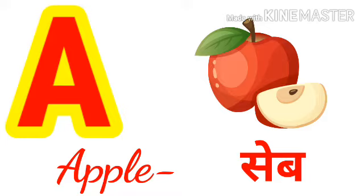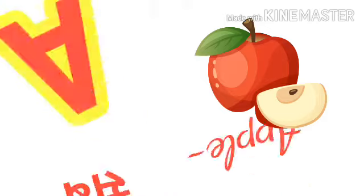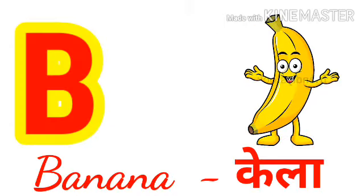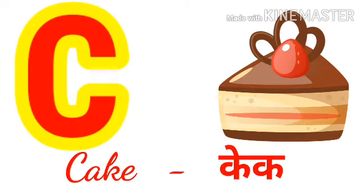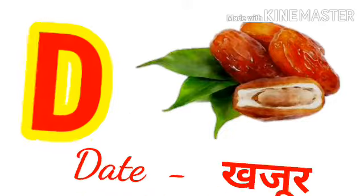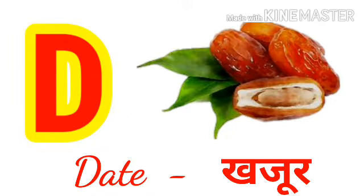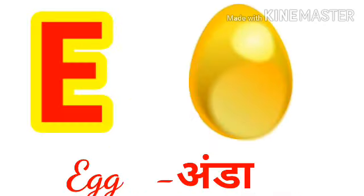1. A for apple, apple means seb. B for banana, banana means kela. C for cake, cake means cake. D for date, date means kajur. E for egg,